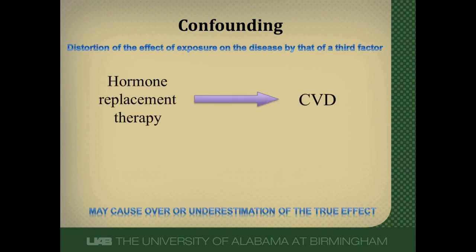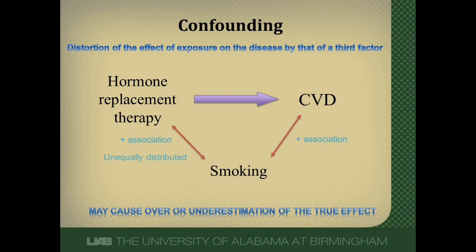Let's consider a study where we're trying to figure out if hormone replacement therapy is associated with cardiovascular disease, and we need to decide whether smoking is a confounder. For smoking to be a confounder, it has to have several characteristics: it must be associated with the outcome of interest — we know smoking is associated with cardiovascular disease — it must be associated with the exposure, unequally distributed between the exposed and unexposed cohorts, and it must not be just a link in the causal chain between exposure and outcome.